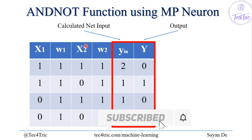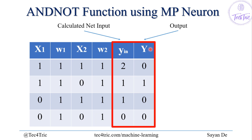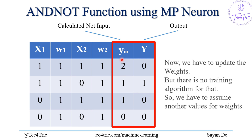This column represents our calculated net input and this is the actual output. In the AND-NOT function, the output should be high only when the first input is high and the second input is low. But here, this neuron is also going to fire for other cases, so there is some error. To overcome this, we have to update the weights.